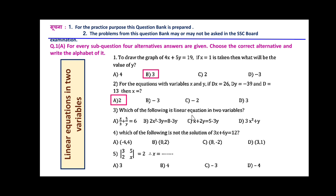Which of the following is a linear equation in two variables? In option A, y is in the denominator, so it will not be valid. In option B, the index is 2, which is not possible for a linear equation. In option D, the index is also 2, which is not possible. So the option left is C: x + 2y = 5 - 3y, which is a linear equation in two variables.